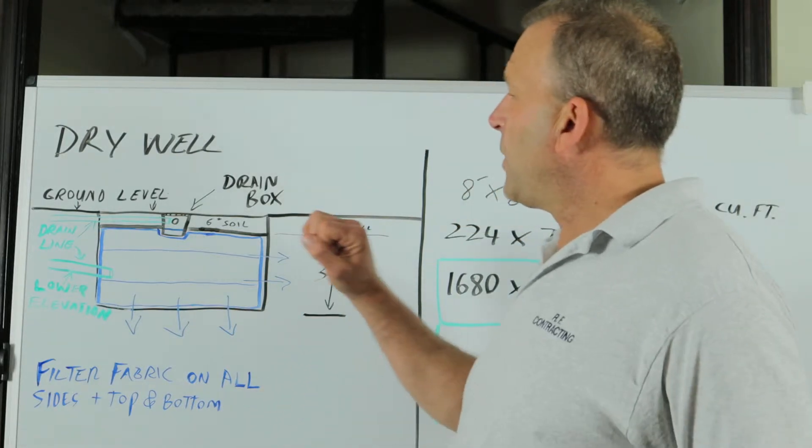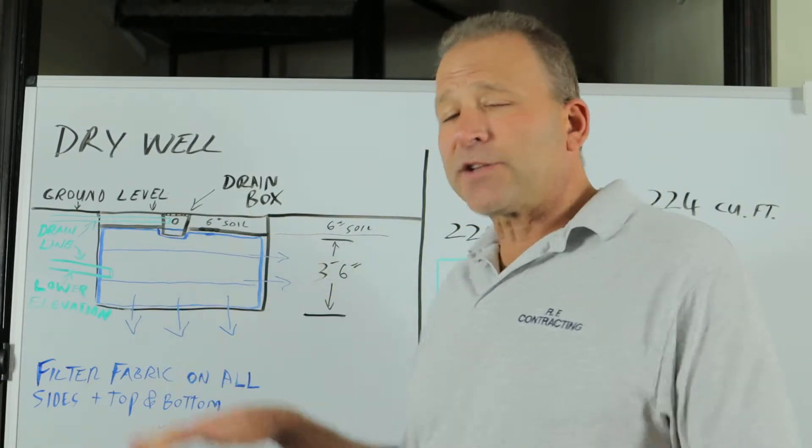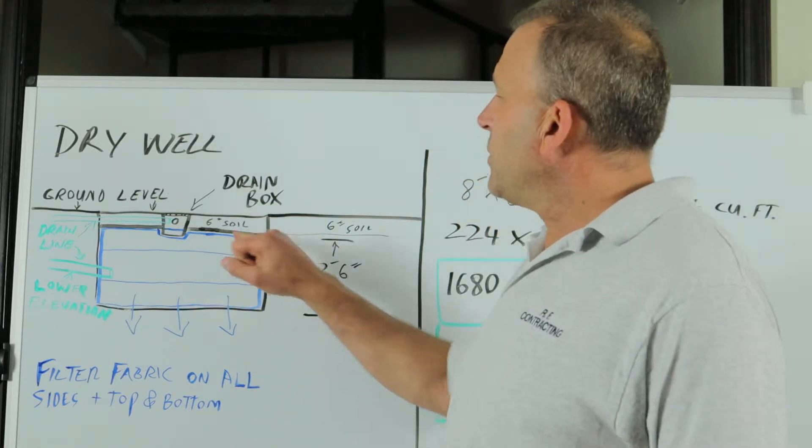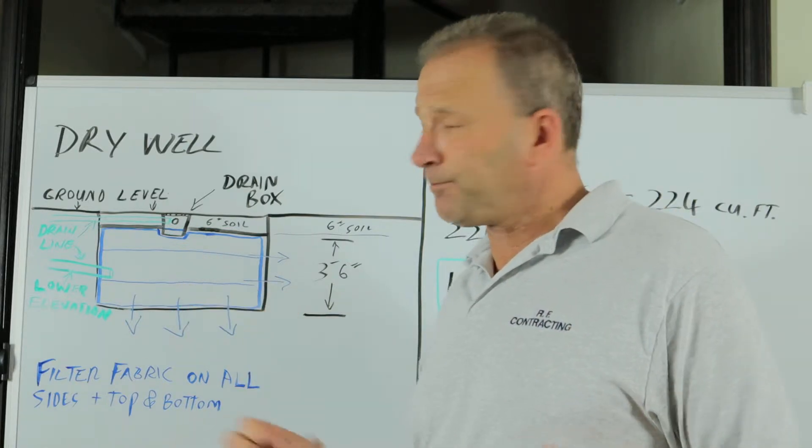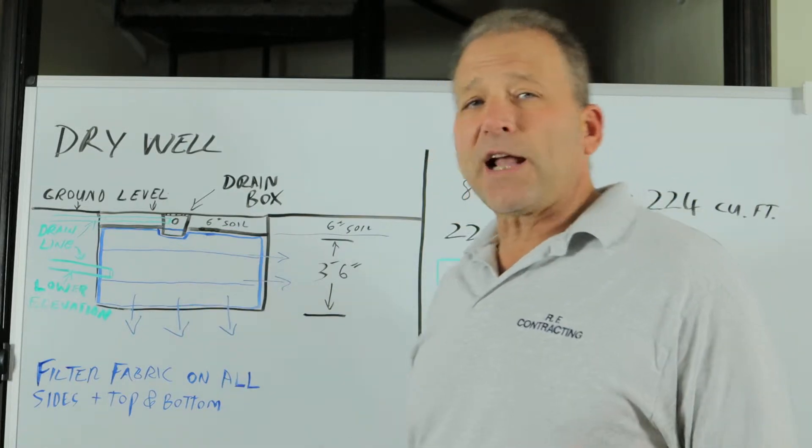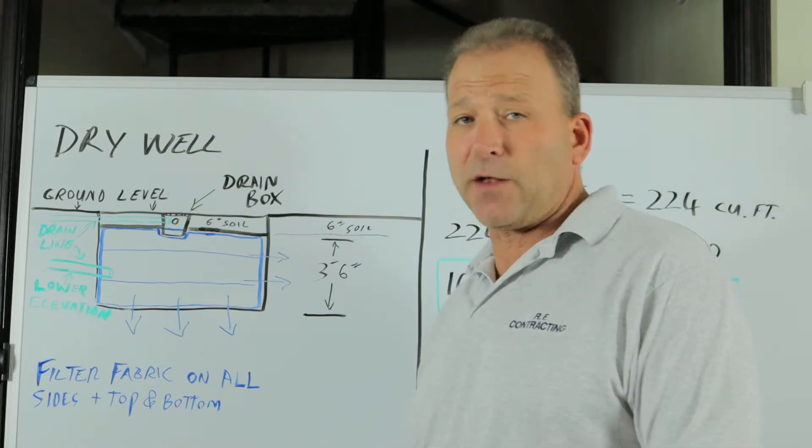In this illustration we've got a drain box to collect surface water. We use the top six inches for soil so we can grow grass on top of it, and we connected our drainage system directly into the dry well itself.